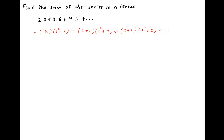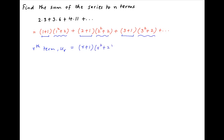Therefore, the general term or the rth term of this series, denoted by ur, can be expressed as a product of two components. The first component is r plus 1, and the second component is r square plus 2.